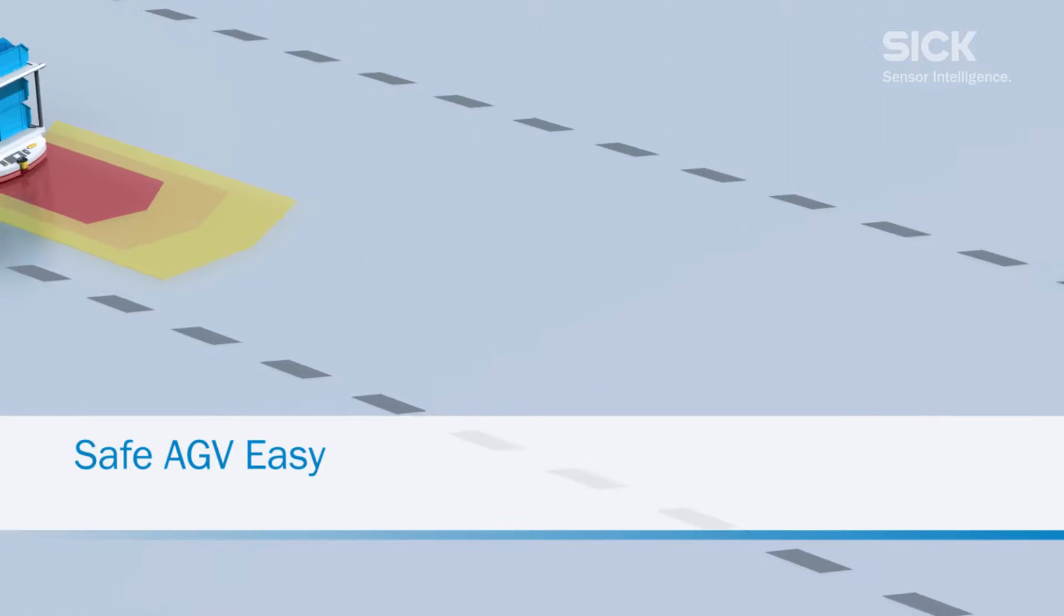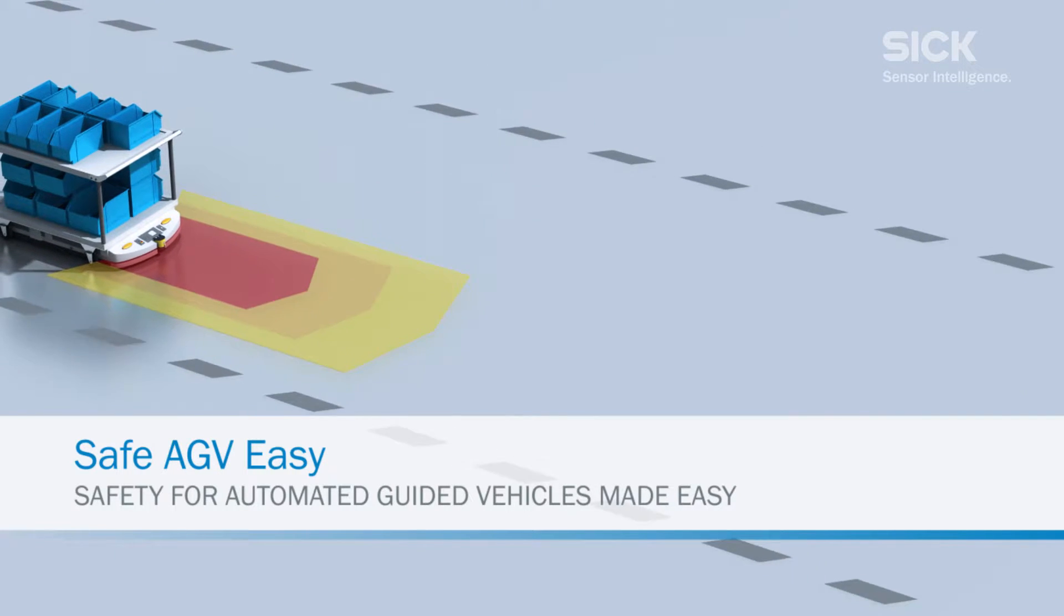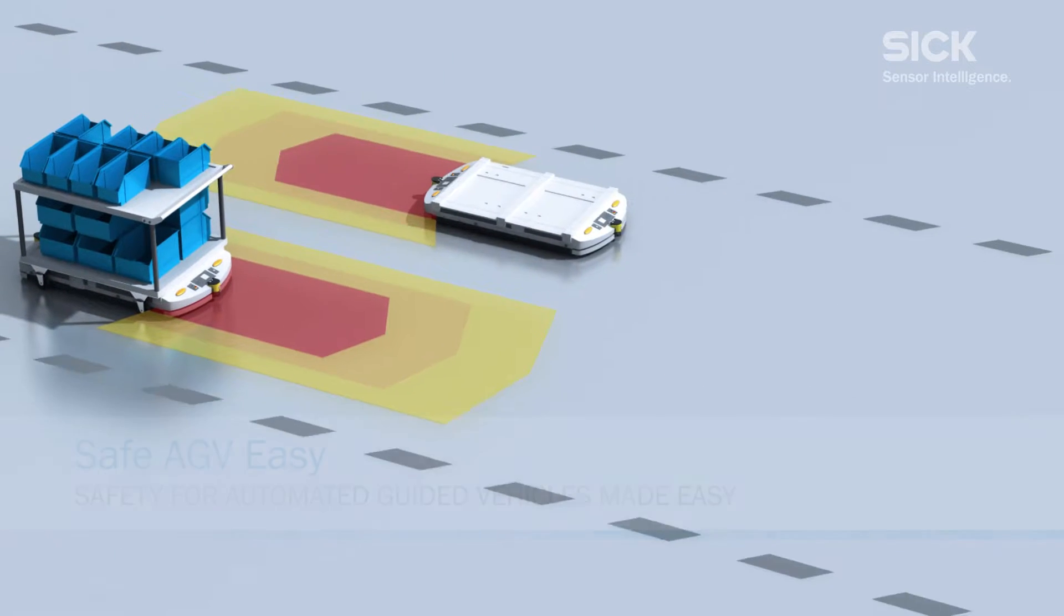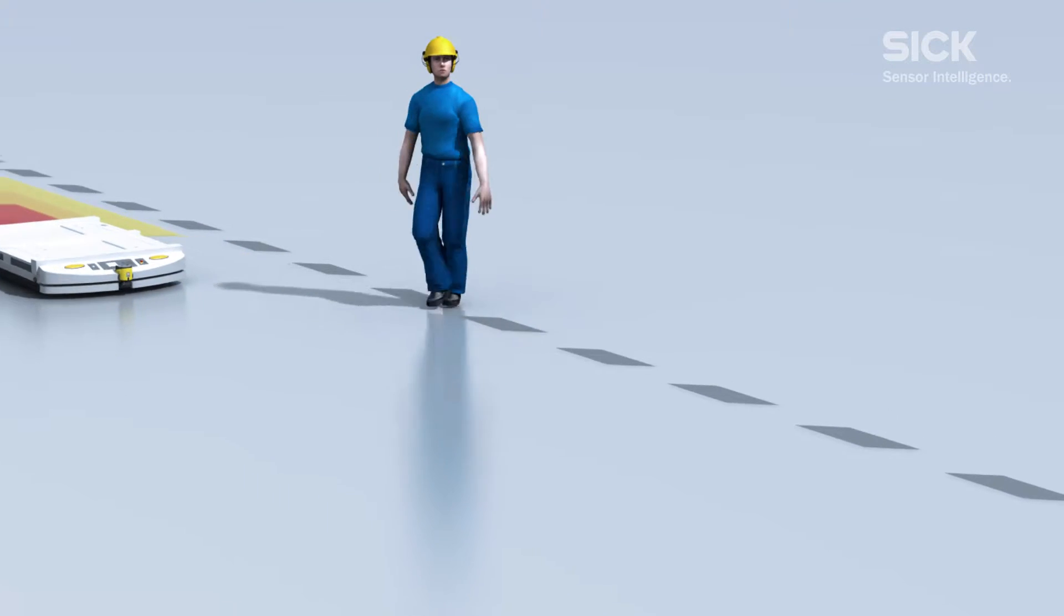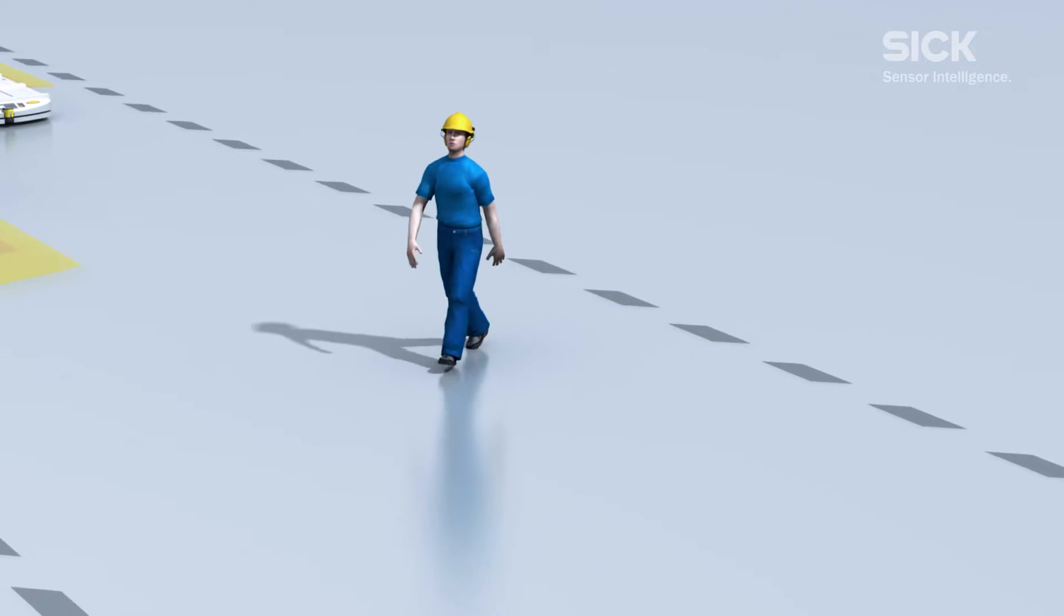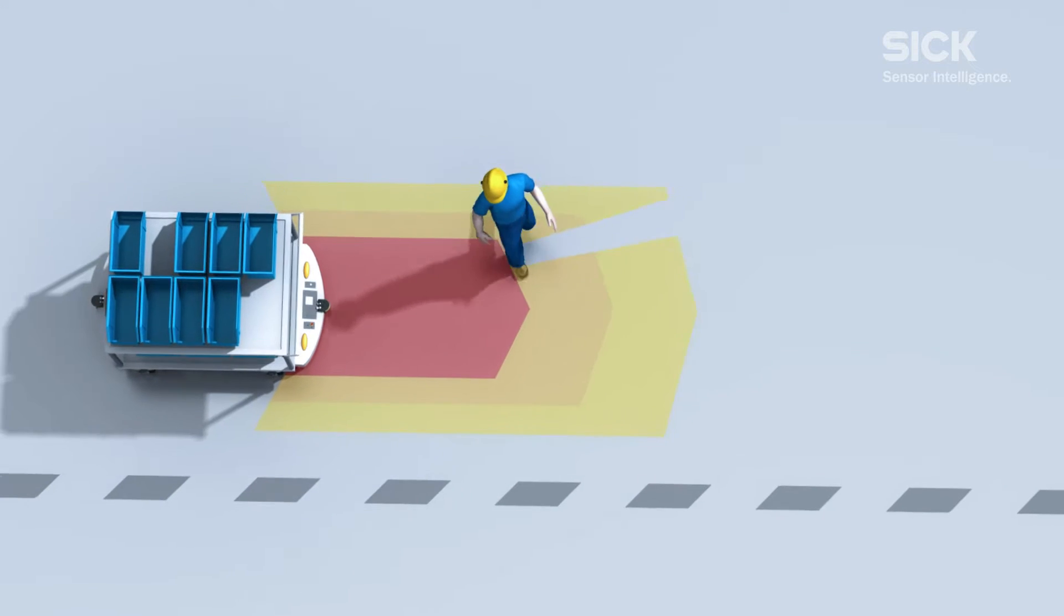During operation, it is not uncommon for small industrial trucks known as automated guided carts to cross paths with workers traveling on foot. In order to avoid accidents, a suitable form of protection for all directions of travel is required.